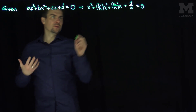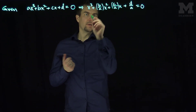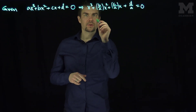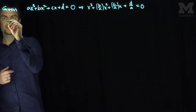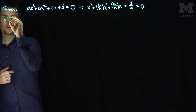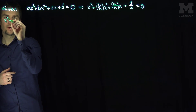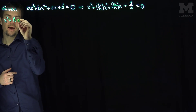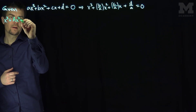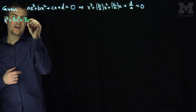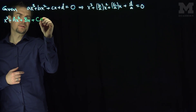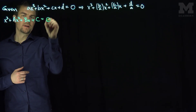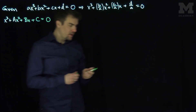Then, the first thing we'll do is re-label these terms. So I'll re-label these as: x³ + Ax² + Bx + C = 0.